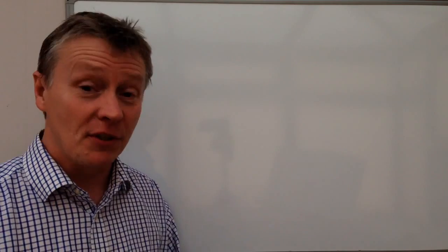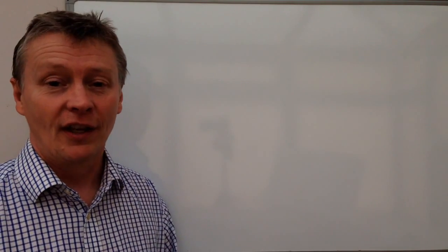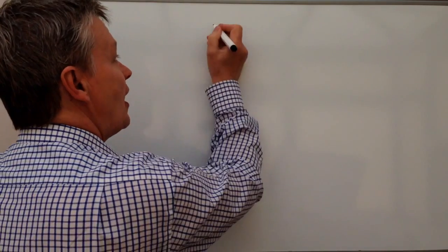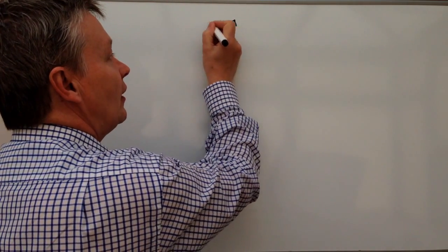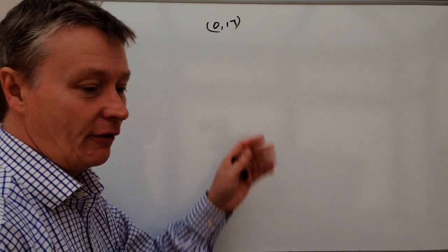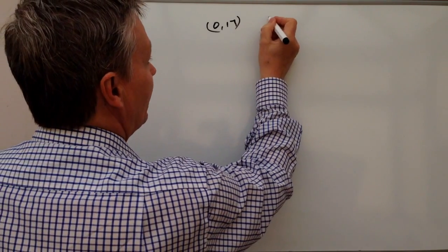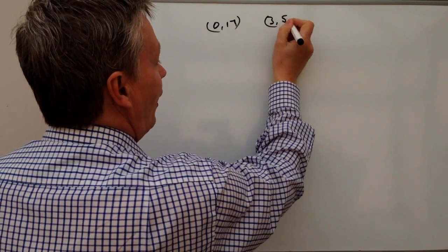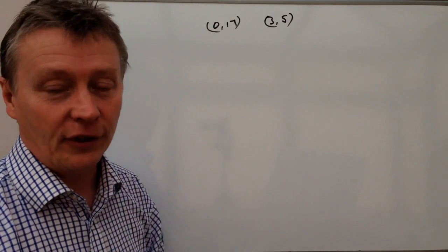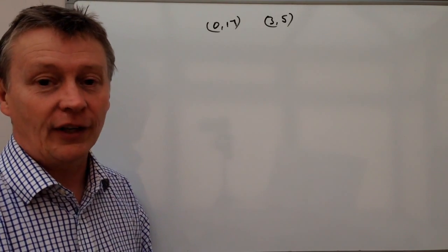What we're going to do here is look at a specific exam question, and this particular one only gives you a little bit of information. What it says is the equation of a line passes through two points. One of those points is (0,17) and the other point is (3,5), and it wants you to work out or calculate the value of the equation.